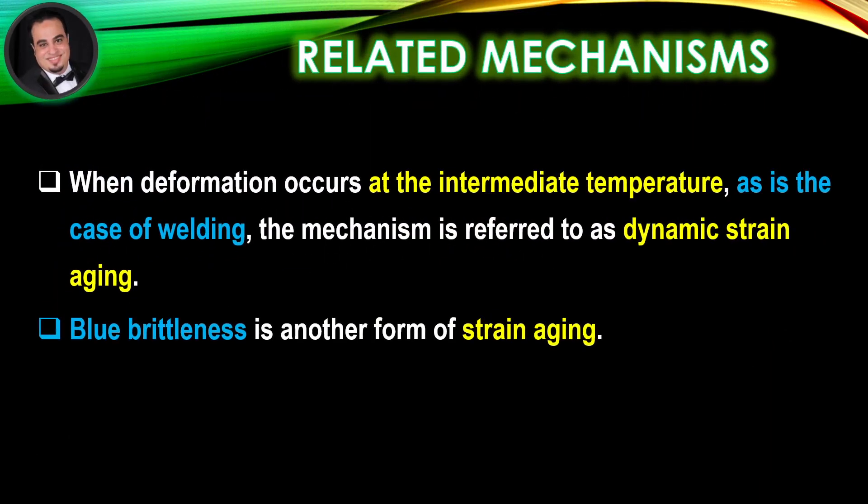Related mechanisms: when deformation occurs at an intermediate temperature, as is the case with welding, the mechanism is referred to as Dynamic Strain Aging. Blue Brittleness is another form of strain aging.